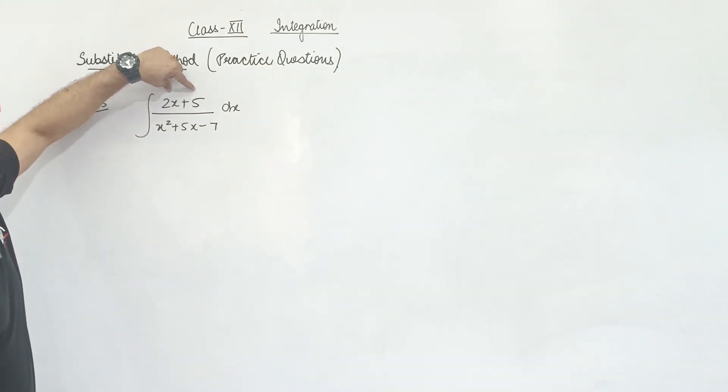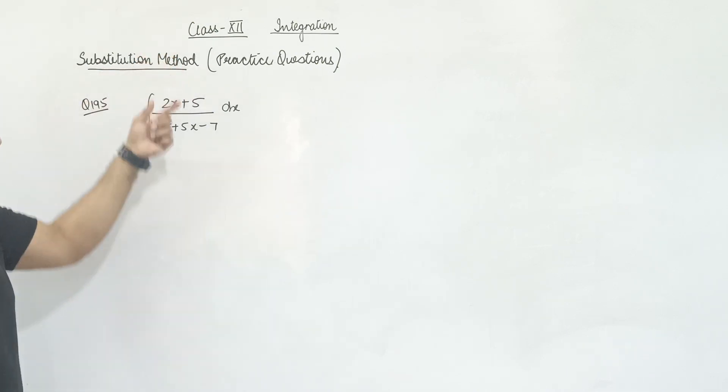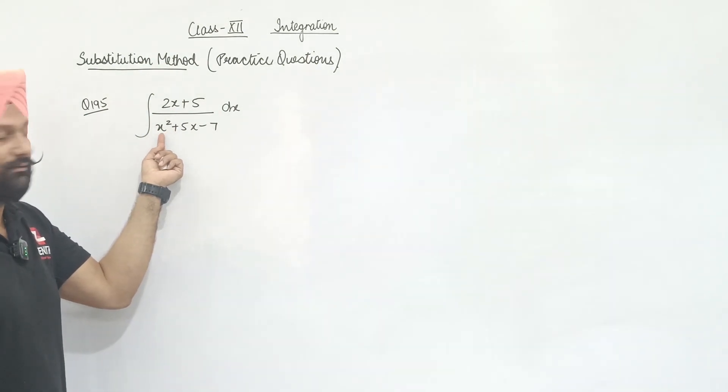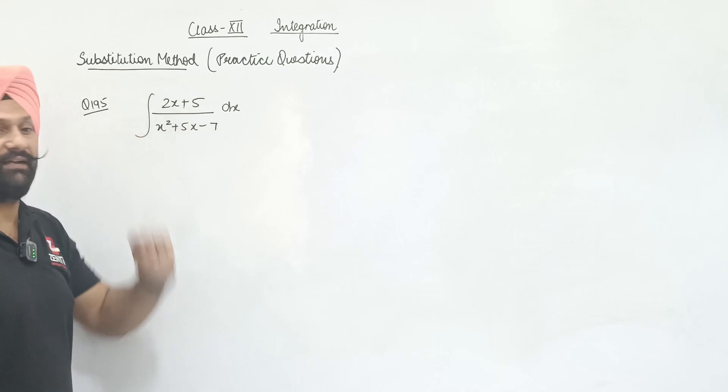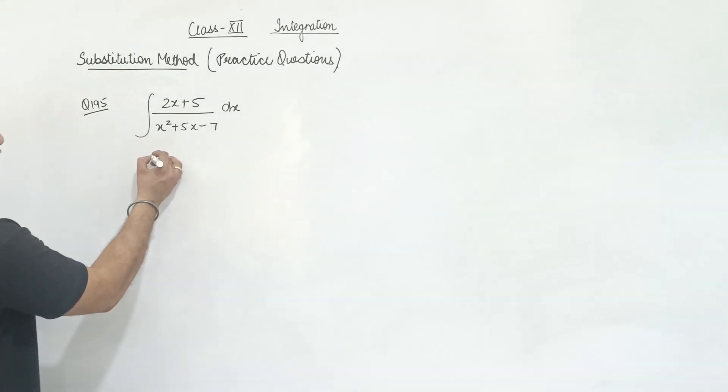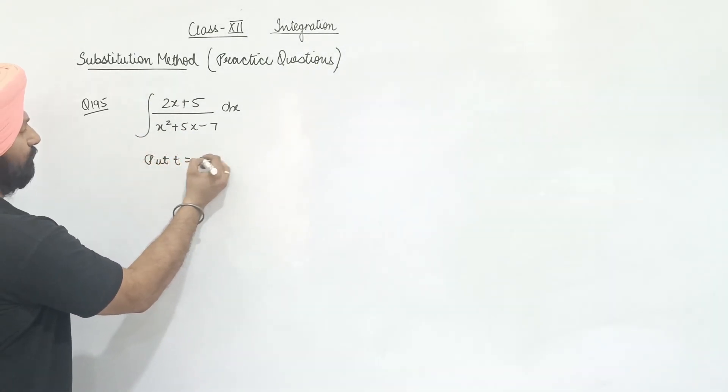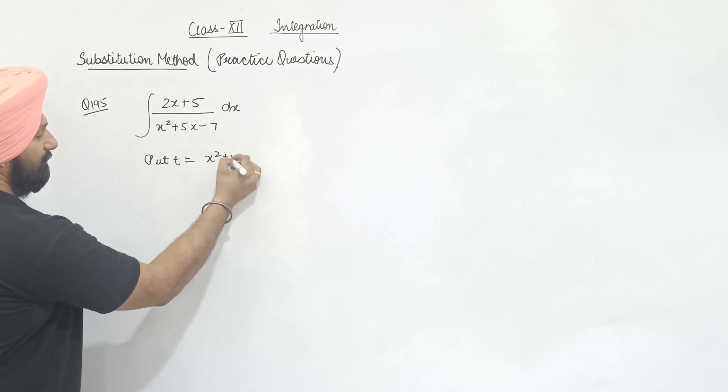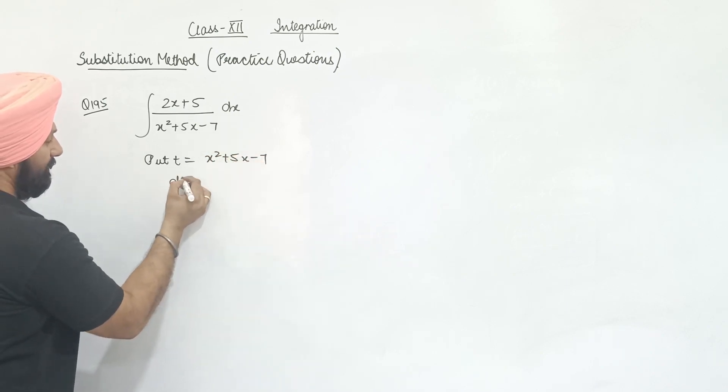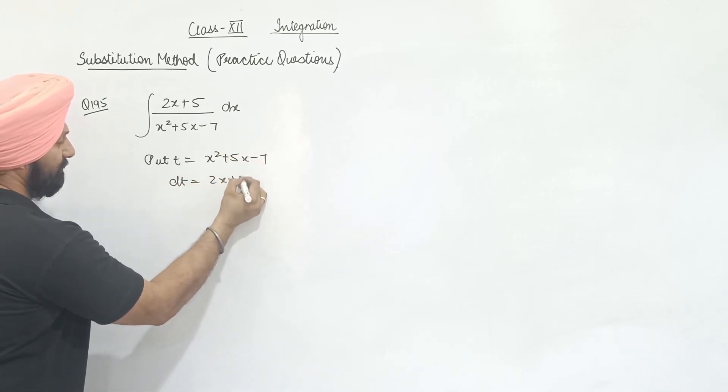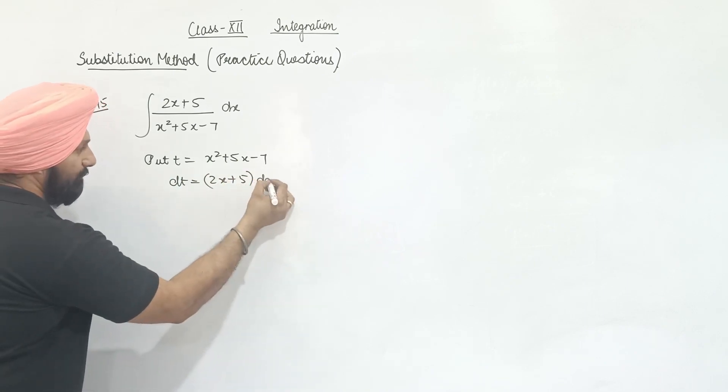Now, 2x plus 5 will be the derivative or it will be the multiple? The derivative of x squared? 5x derivative? 7 derivative? So what is the derivative of the derivative? So what do we do in substitutions? Put t is equal to x squared plus 5x minus 7. dt what makes 2x plus 5, which was dx, which was the other side of the multiple.